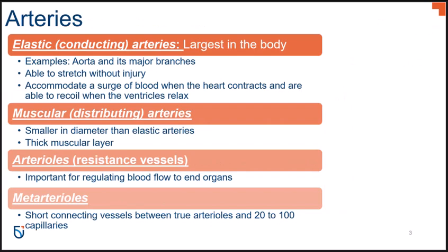There are several different types of arteries in the cardiovascular system. Elastic arteries, also called conducting arteries, are the largest in the body and include your aorta as well as the major branches off the aorta. As the name implies, elastic arteries are able to stretch without causing injury to accommodate the surge of blood forced into them when the ventricles contract, and then recoil as the ventricles relax.